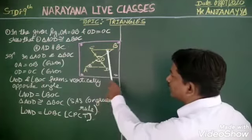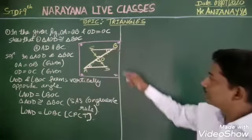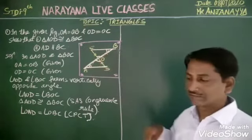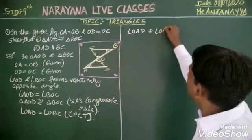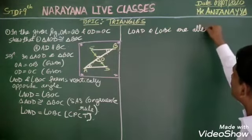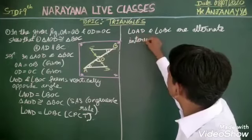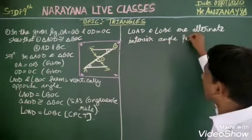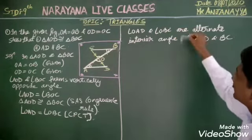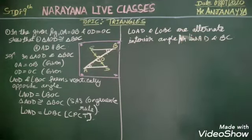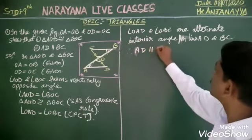Now, if you observe these two angles, considering AB as a transversal, these two angles form alternate angles. So the corresponding angles are alternate interior angles for lines AD and BC. Therefore, I can say AD is parallel to BC.